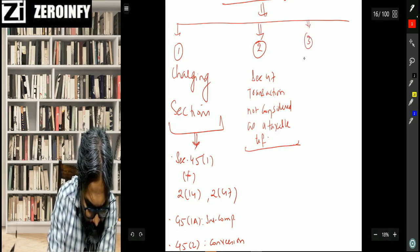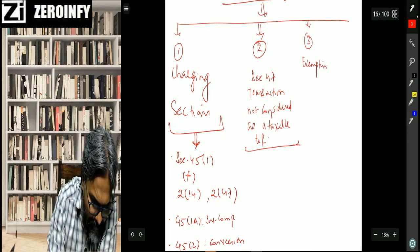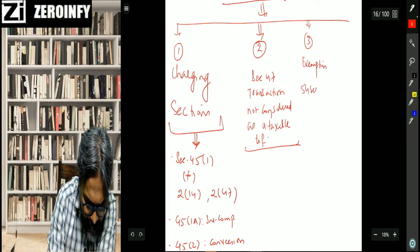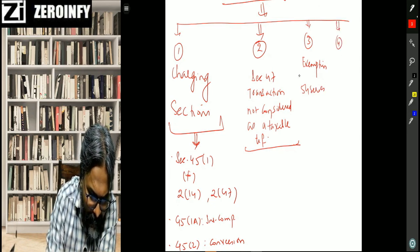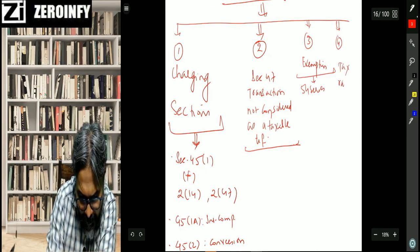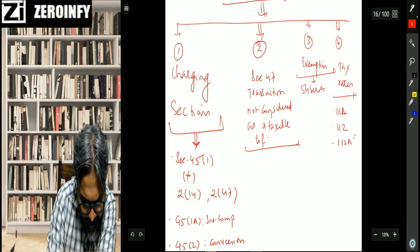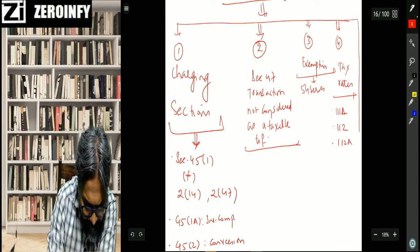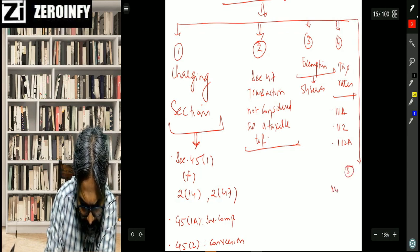The third one students you should be doing is about the exemption, 54 series. The fourth one, exemption is for what? 54 series. The fourth one is about the tax rates, because we all know there are some special tax rates which are there under the head capital gains. And these are the special tax rate students which are there, so far as the head capital gains is concerned. And the last one students, you will say for number five to be your miscellaneous part.